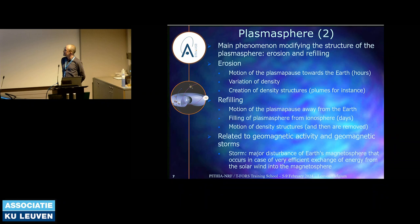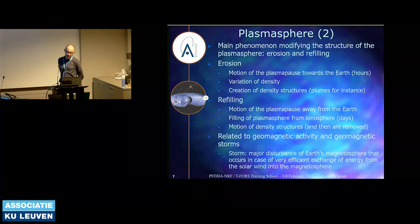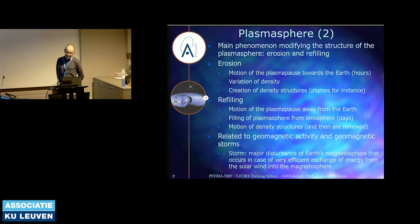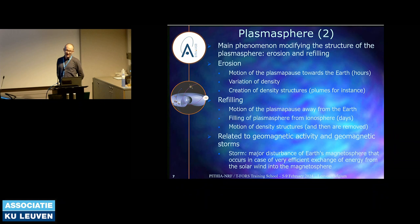There are two phenomena that modify the structure of the plasmasphere: erosion and refilling. During erosion, the plasmapause is moving towards the Earth on a timescale of hours, the density inside changes, and density structures like plumes are created. The second phenomenon, refilling, occurs over several days during which the plasmapause moves away from the Earth, and the plasmasphere is filled by ions and electrons coming from the ionosphere. These density structures can move with the plasmasphere in co-rotation or sub-co-rotation and then be removed.